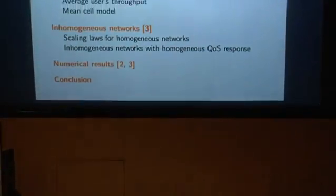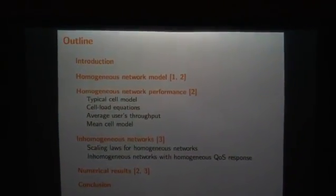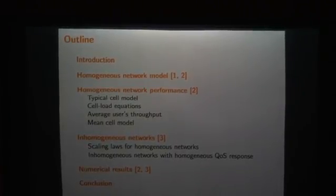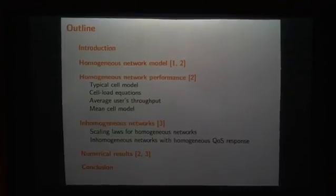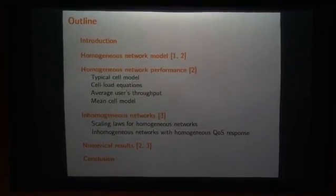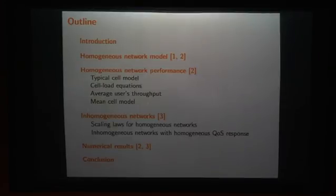The outline of my presentation is the following. After a short introduction, I will describe a homogeneous network model. Then I will focus on the performance of this model through several steps: first the typical cell model, then the cell load equations, then a result about average user throughput in large homogeneous cellular networks, and finally a simplified model called the mean cell model. After that, I will show how to tackle inhomogeneous networks over a large country, and finally I will show the numerical results.